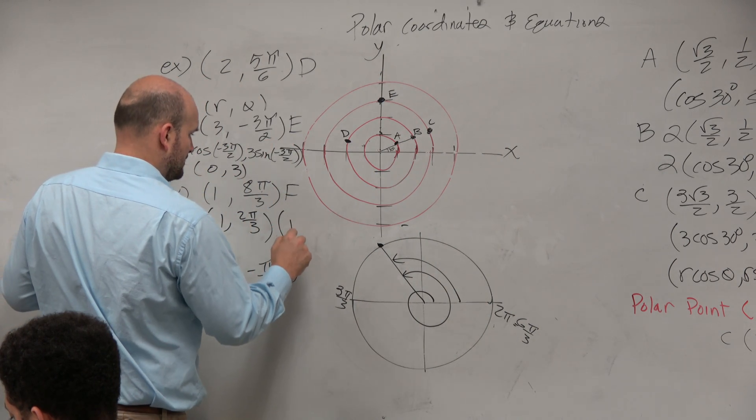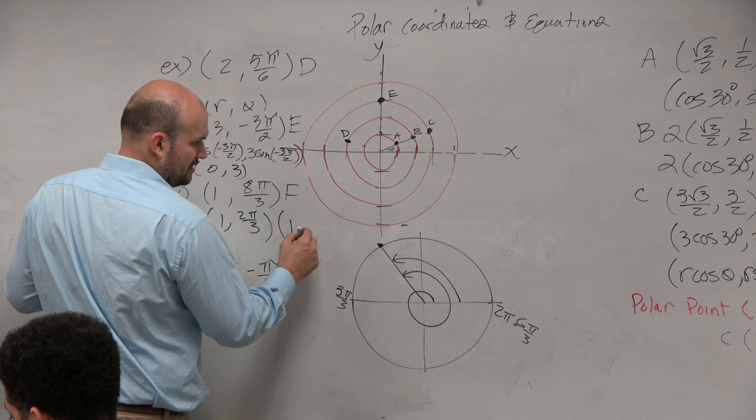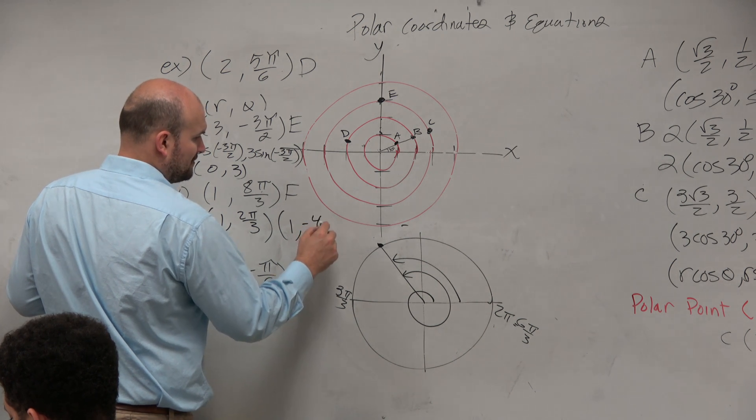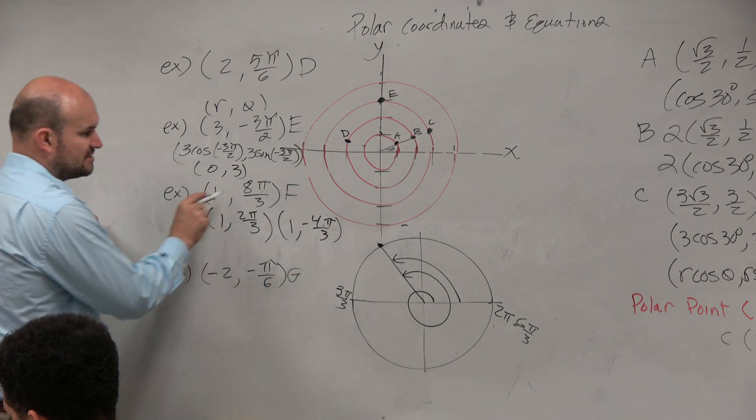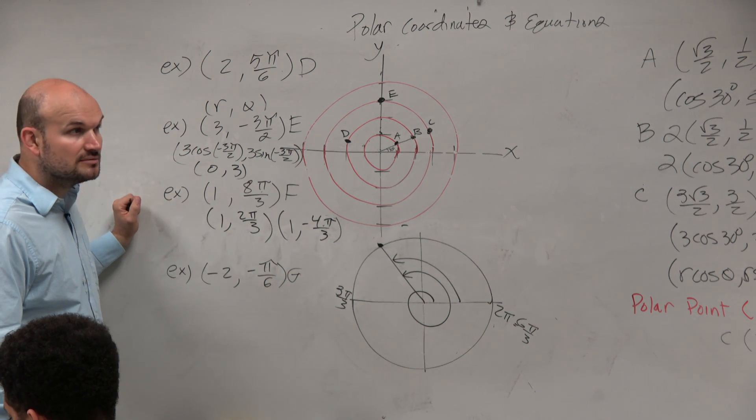Or, could I also do it this way? Could I do 1 comma negative 4π over 3? If I subtract it again. Yeah, subtract it again. That works, right?